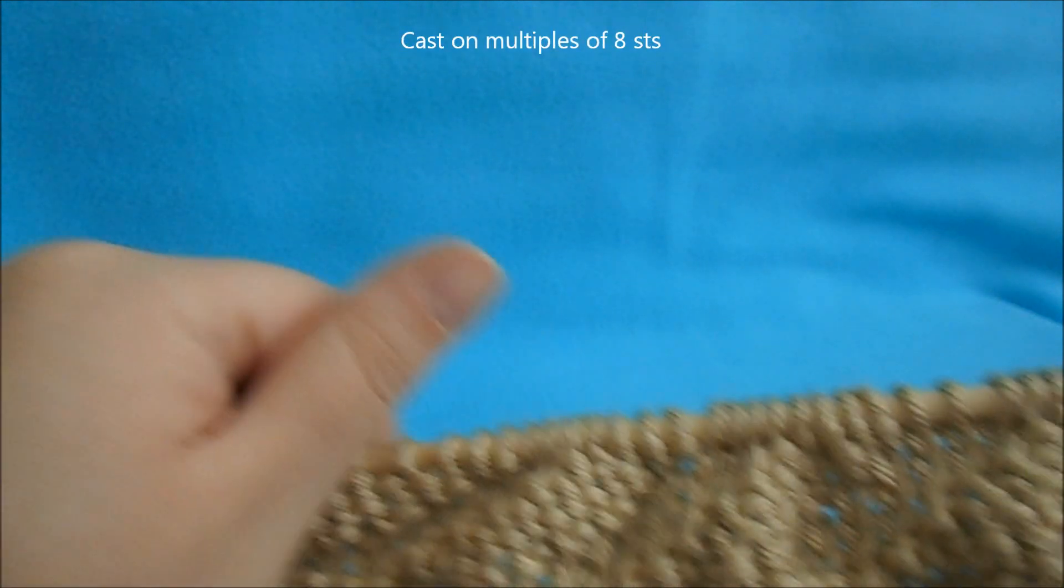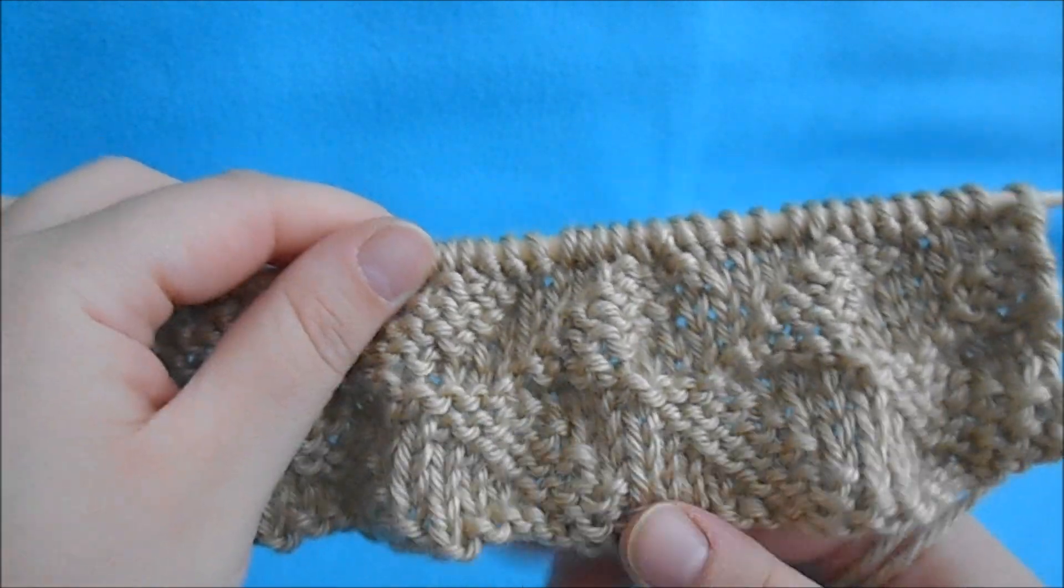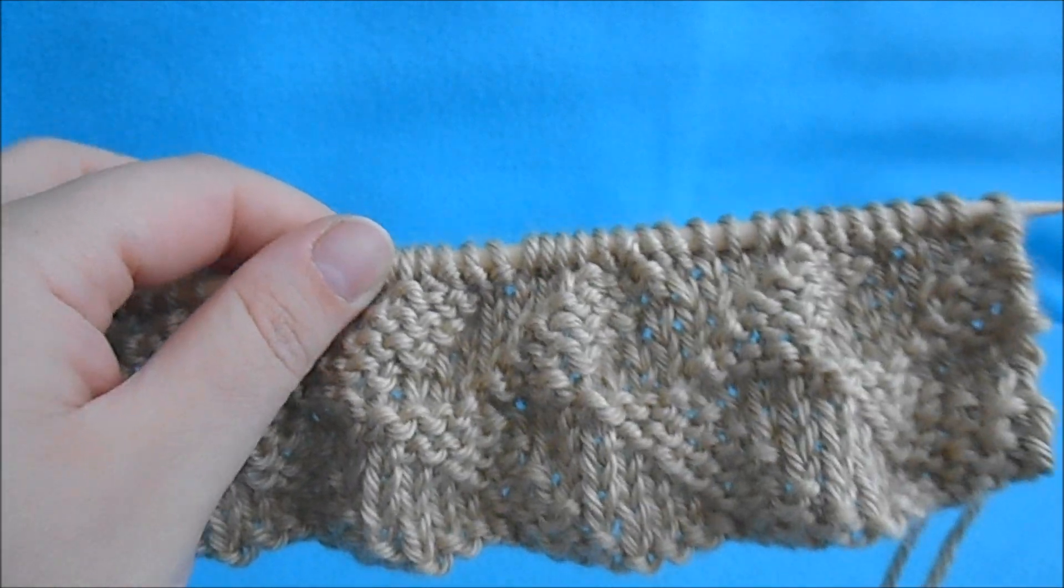For this pattern you're going to want to cast on in multiples of 8 stitches. The pattern consists of 12 rows to form the pattern, and some of the rows are repeated throughout. I will list which rows share the same pattern.